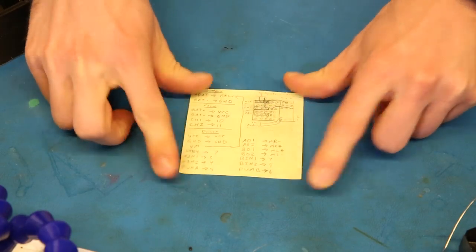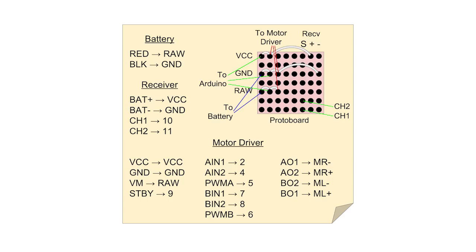Next, I make a list of connections that I need to make on a sticky note that I can reference while soldering. In case you couldn't read my handwriting, I've made a much nicer diagram of the wiring here. Each of these connections will need to be soldered together using wires. I've also added a diagram of the snappable protoboard that shows the power buses.